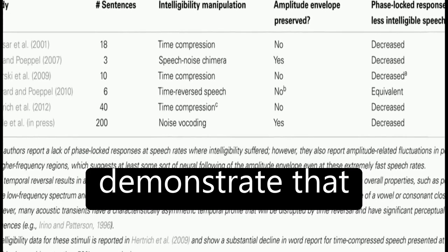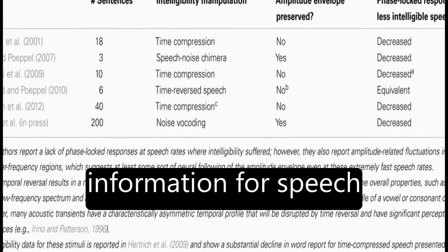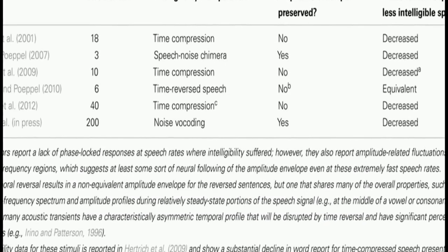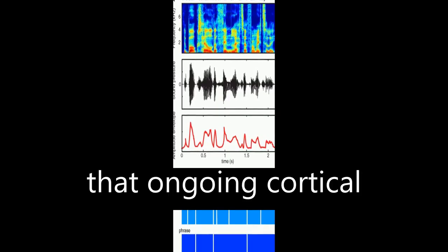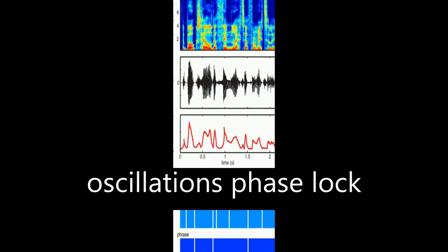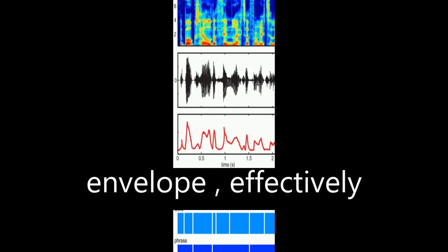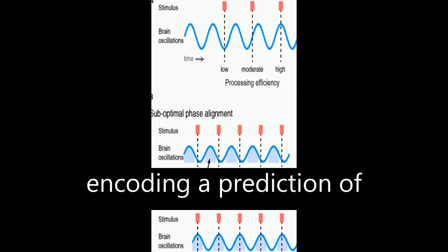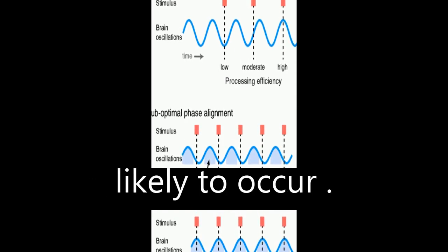Behavioral studies demonstrate that listeners rely on this information for speech intelligibility. Neuroimaging data shows that ongoing cortical oscillations phase locked to low-frequency information in the speech envelope, effectively encoding a prediction of when important events are likely to occur.